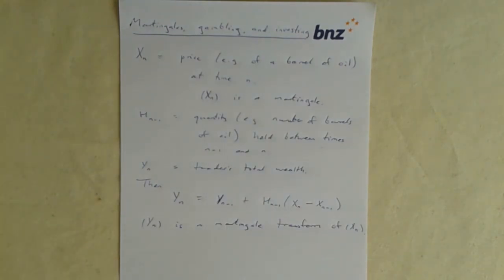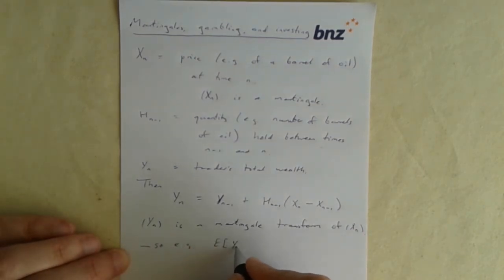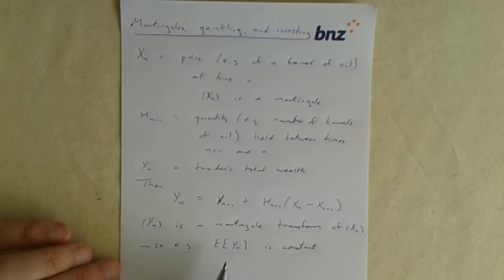So this says that yn is a martingale transform. So what's the big conclusion we can draw from that? It is that if we've assumed xn to be a martingale in the first place, then that means that yn is a martingale too.